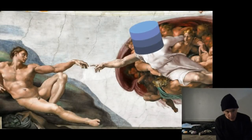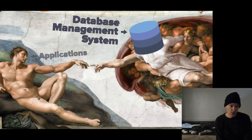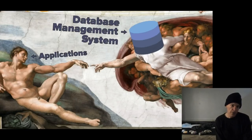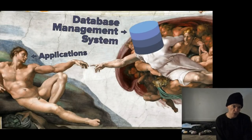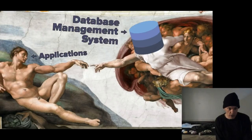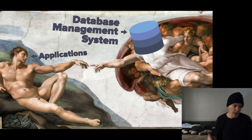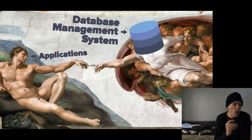The answer to all of these problems is a database management system. The way I think about it, a DBMS is the god to applications — the omnipotent entity that makes sure your data is not only correct but also safe. It ensures that programs can use it without having to make major changes to their code every time you change the schema. The applications don't need to know anything about how the data is actually being physically stored — whether it's in memory, on disk, or across multiple machines — allowing you as an application programmer to just focus on writing your application and not worry about how to store data.